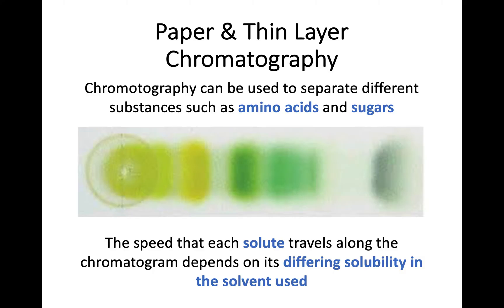The next technique is chromatography, which you've probably come across in school, perhaps separating out ink with pens. Chromatography is used to separate different substances such as amino acids and sugars. The speed that each solute moves through chromatography paper or a thin layer depends on the differing solubility of the solute in whatever solvent you are using.